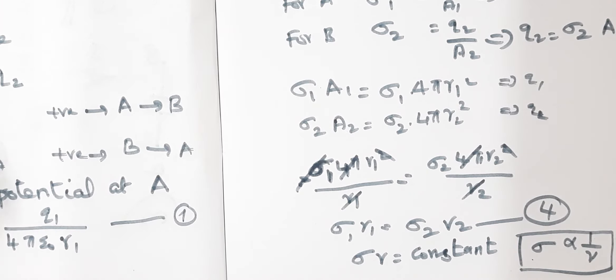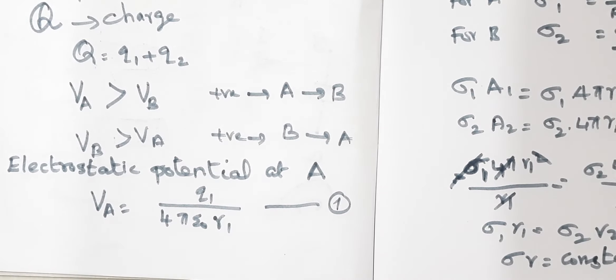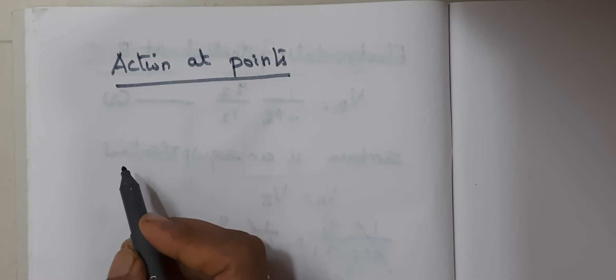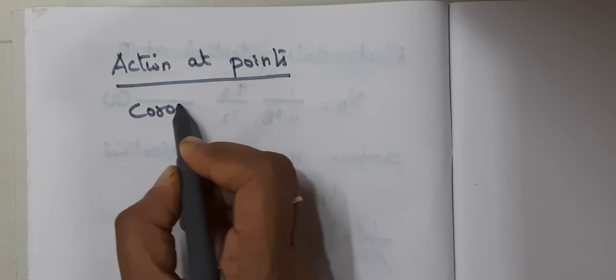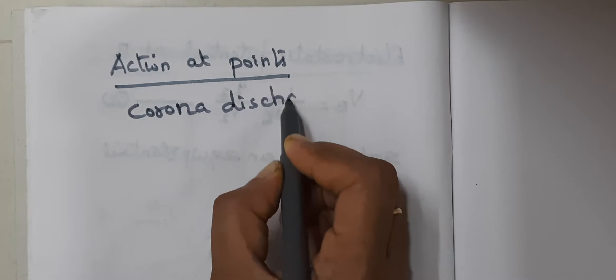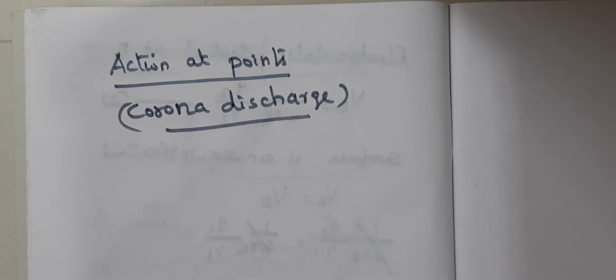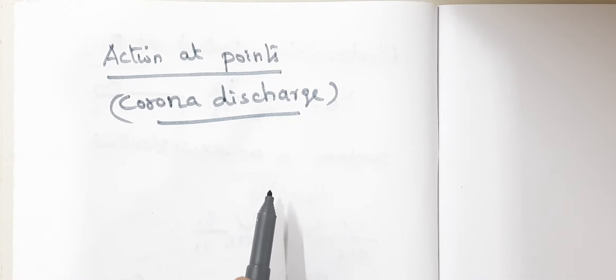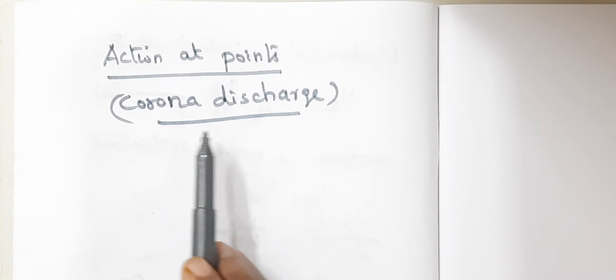I hope you have understood this concept and learned the formulas. The next problem given in your book is problem 1.23 — it is solved in your book, try to do that problem. If you have any doubt you can ask in the interactive section. Now the next topic is action at points, also known as corona discharge. Let us discuss this concept.